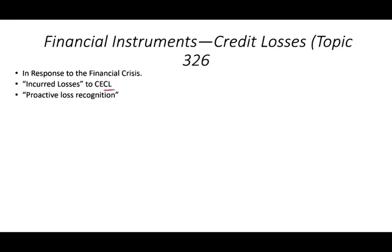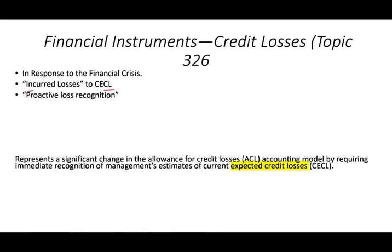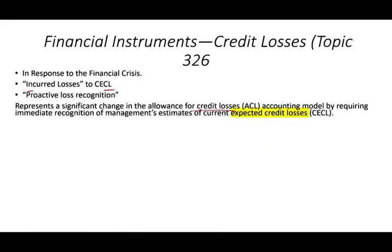Especially banks and financial institutions, they have to look in advance — not about incurred losses now, but about expected losses. This represents a significant change in the allowance for credit losses, requiring immediate recognition of management's estimate of current expected credit losses. How do you project your expected credit losses? It's not easy. I do have a link in the description covering this topic. In implementation, it's very difficult for companies to implement.